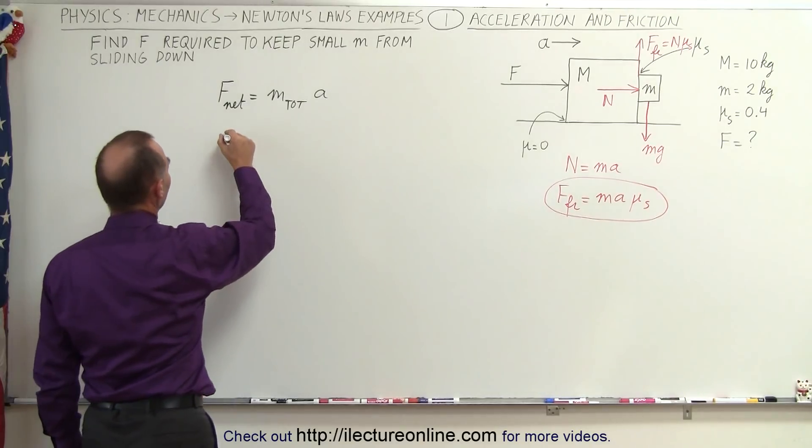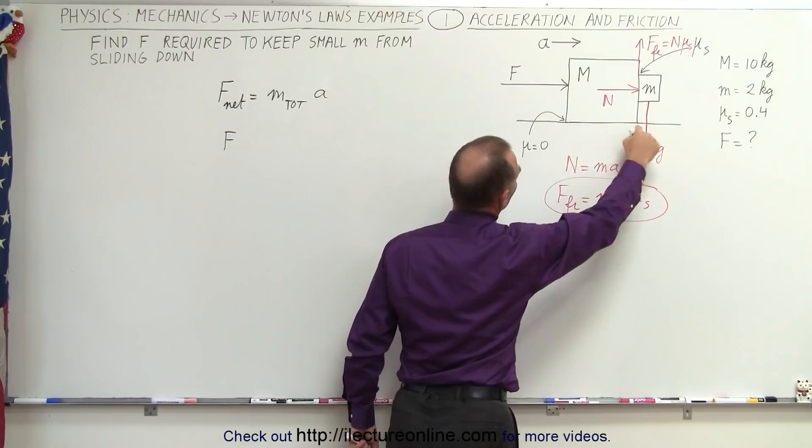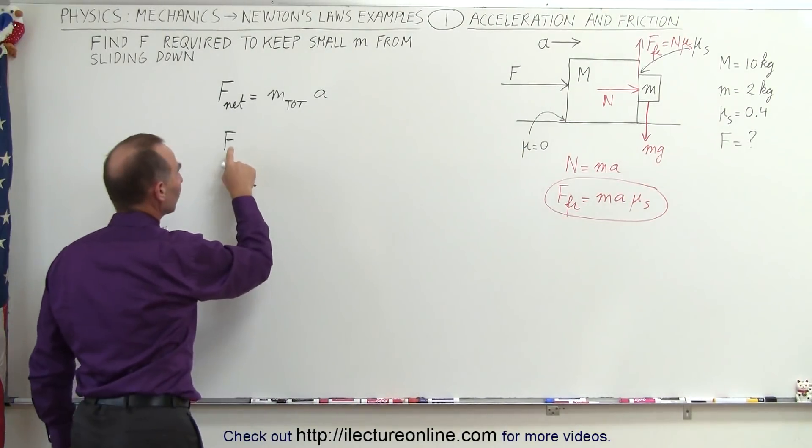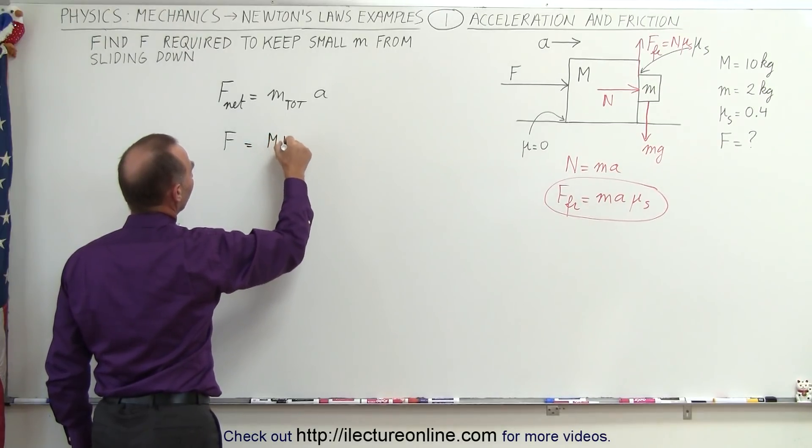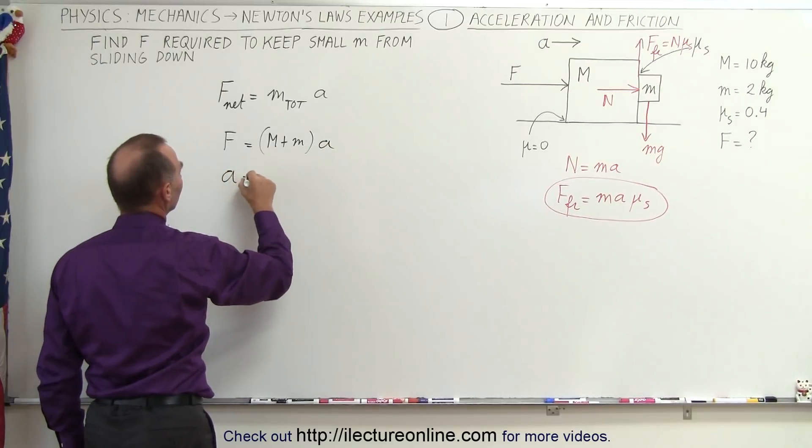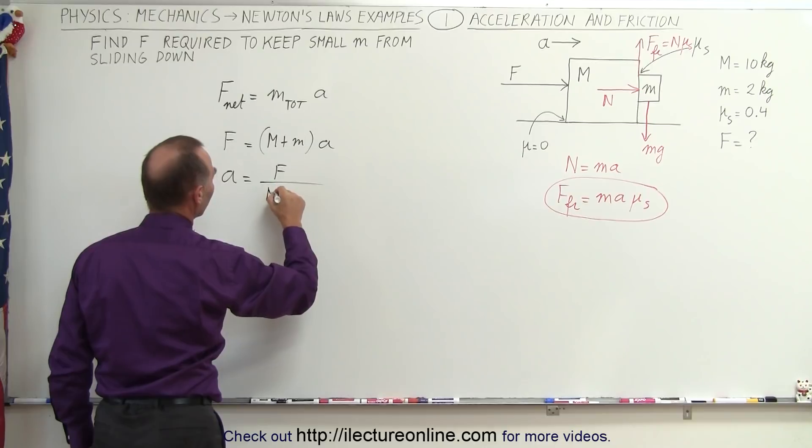So that means that F, which is the force that's pushing it, notice there's no coefficient of friction on the surface here, so there's no friction force pushing back. So the net force is the force pushing, which is equal to the total mass, m plus M, times acceleration. So therefore the acceleration is equal to the force pushing the two blocks, divided by the sum of their two masses.